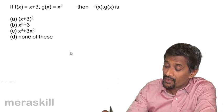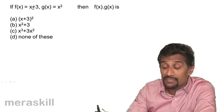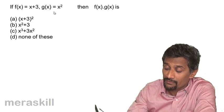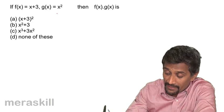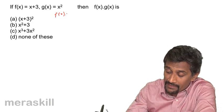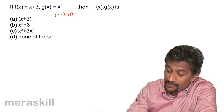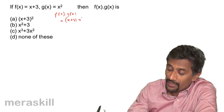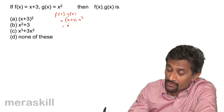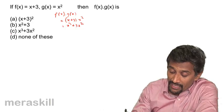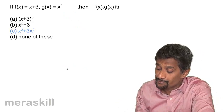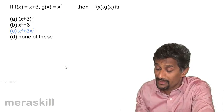Next, F(x) = x + 3 and G(x) = x². We are asked to find F(x) × G(x). So F(x) × G(x) = (x+3) × x² = x³ + 3x². The answer is x³ + 3x².